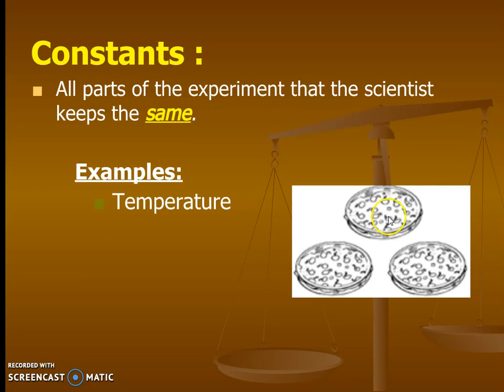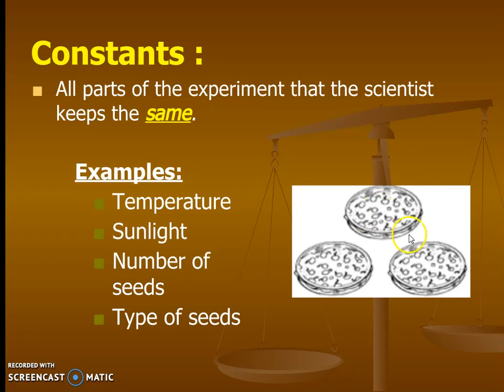If some of the seeds are in room temperature and some are in the heat and some are in the fridge, that's not fair. I need them to stay the same so I can compare them well. Sunlight has to be the same. Otherwise, it's not fair. Number of seeds have to be the same. The type, I need to all have them be the same type. Some can't be sunflowers and others roses. Very good. Hopefully you got down some examples and a key word.